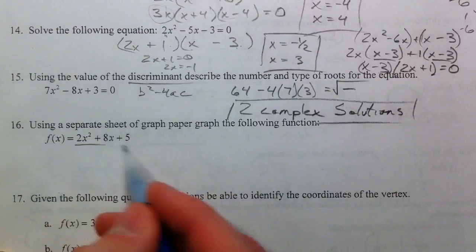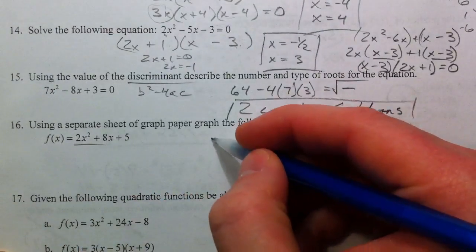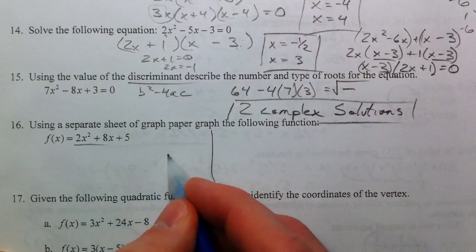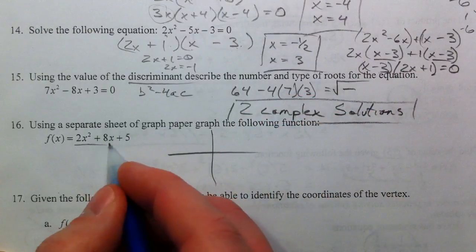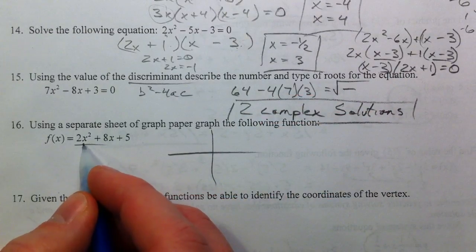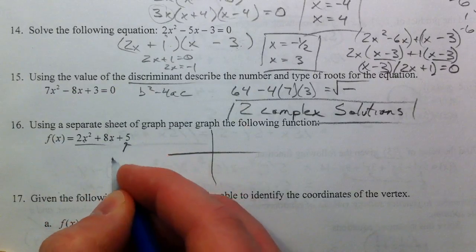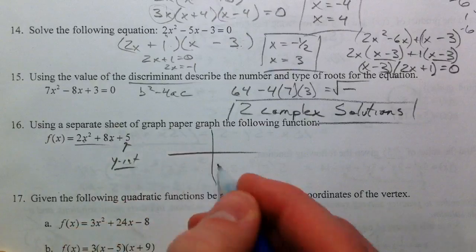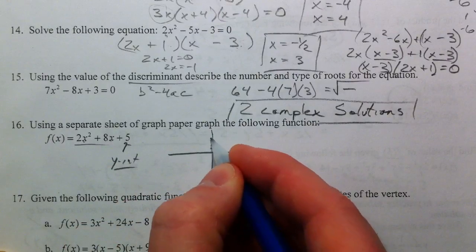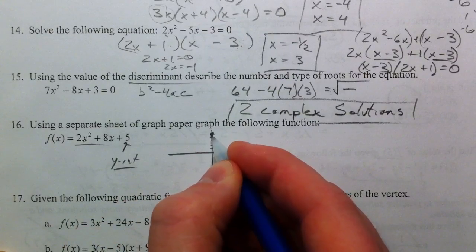Alright, using a separate sheet of graph paper we're going to graph this. I'm not going to use a separate sheet of graph paper just so we can stay on the same sheet. Right away by finding the y-intercept, by plugging in zero for x, you know that this five is the y-intercept. So I'm going to plot that.